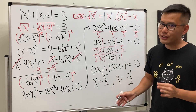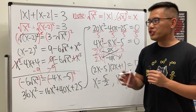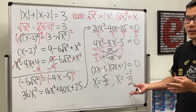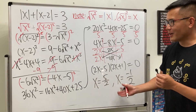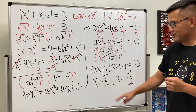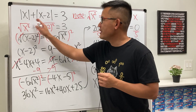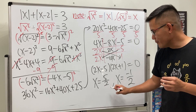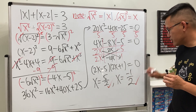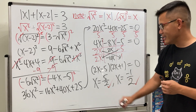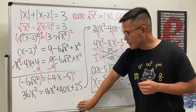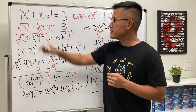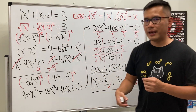Now we have two answers and we should check them. I've run out of space but I've already done the work — I'll leave the check for you: plug in 5/2 and also −1/2 into the original equation to verify. Both check out and are valid. This is how we solve an absolute value equation with two absolute value parts without doing four cases.